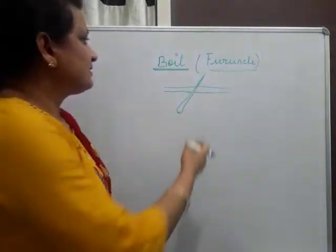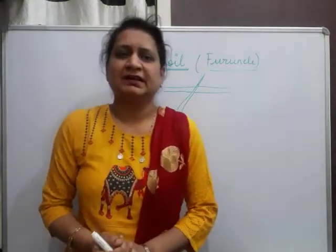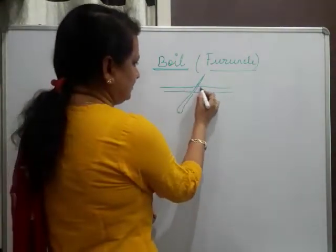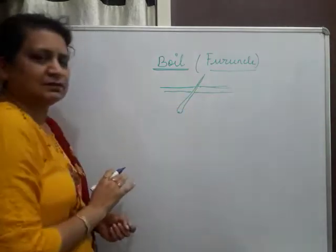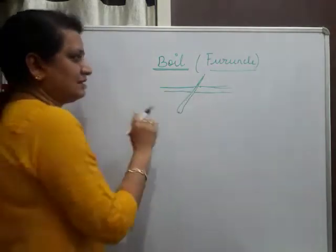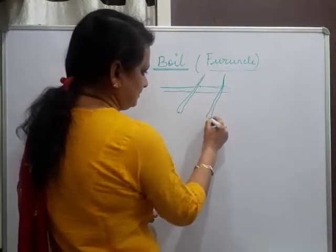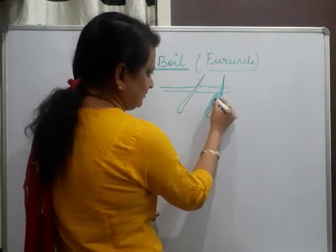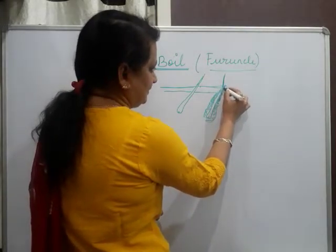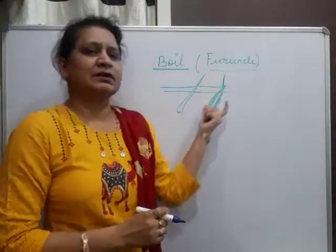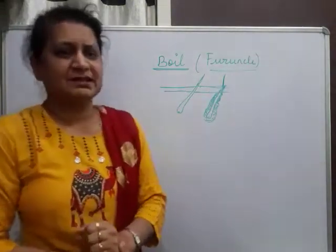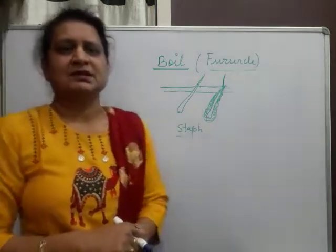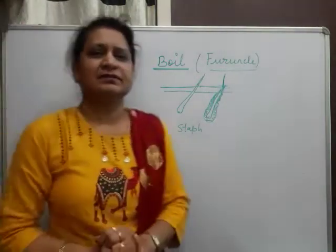What is this boil or furuncle? This boil or furuncle is an acute infection of the hair follicle with perifoliculitis. This is the skin, below are the layers of skin, and this is the normal hair follicle. Now if there is infection in this hair follicle — this is the boil or furuncle. The causative organism is Staphylococcus. Staphylococcus infection is the main causative organism behind this infection.